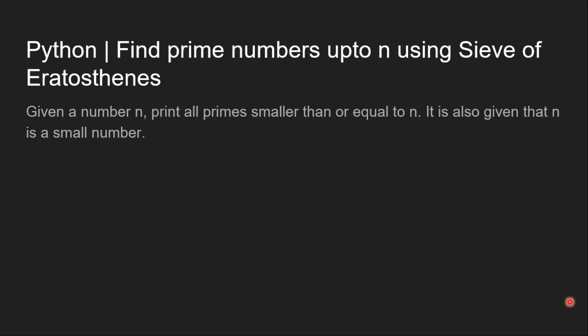Now let's have a look at the problem statement. Given a number n, we have to print all prime numbers smaller than or equal to n.